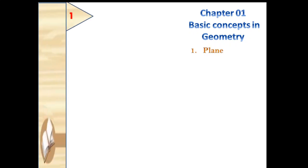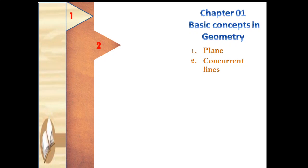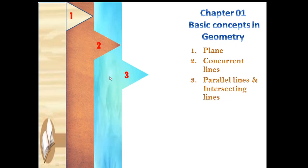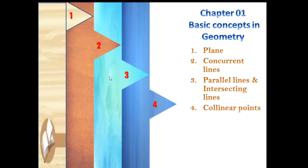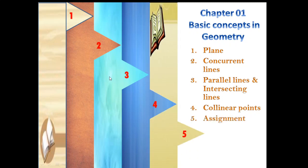The first thing we are going to learn in today's video is plane. Next, we are going to learn about concurrent lines. Then we are going to learn about parallel lines and intersecting lines. Next, collinear points. And at last, there is an assignment based on all these four topics at the end of the video. So let us go to the first topic: plane.